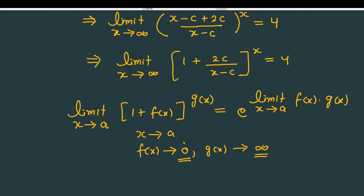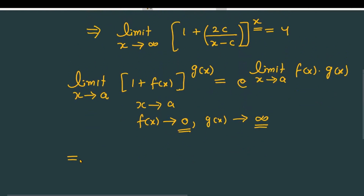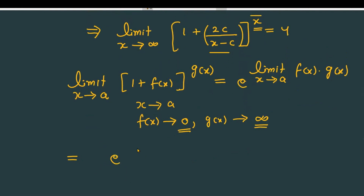Now working on the question: as x tends to infinity, the function 2c over (x minus c) approaches 0, because it is a finite quantity in the numerator and the denominator tends to infinity — finite upon infinity goes towards 0. The power x approaches infinity. So the format matches, the limit conditions match, and we can write: e raised to the power [limit x approaching to infinity of 2c over (x minus c) into x].